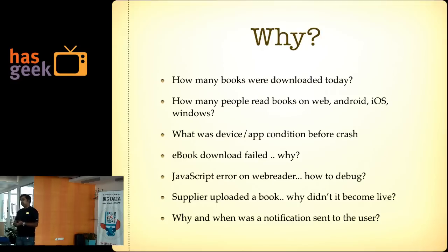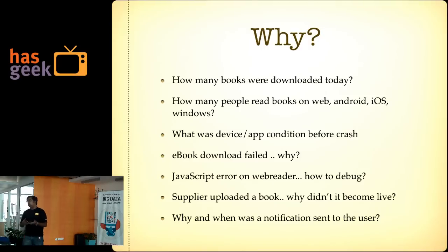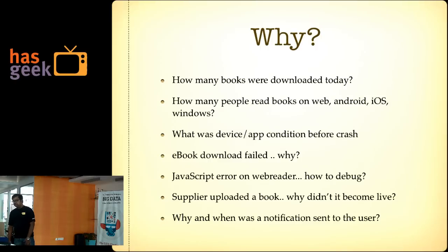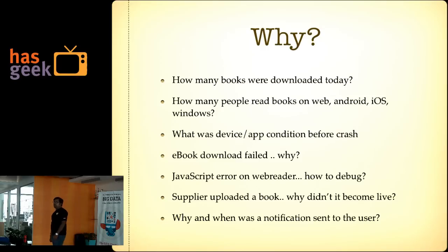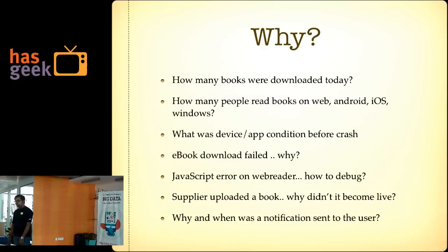For example, download systems — some send out samples that are cached, others send out the actual books which are not cached and are DRM-protected. We needed to monitor all of those systems and know things like how many people are reading books, how many books were downloaded. And if the app crashed, we needed to know the state of the system before it crashed, and handle CS issues like a user saying they can't download a book they already paid for.